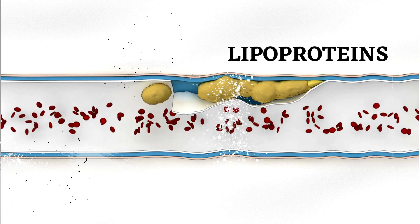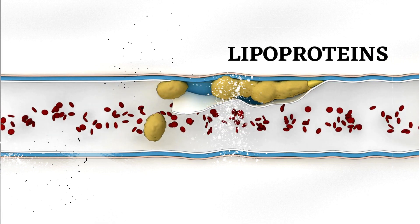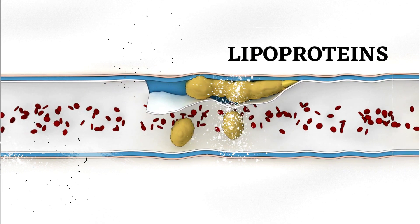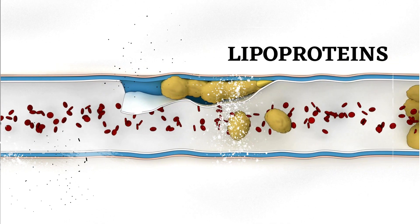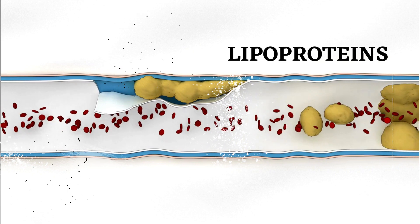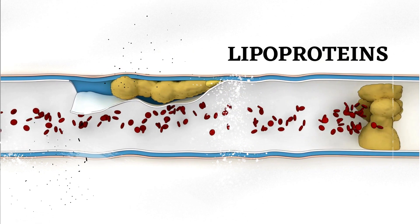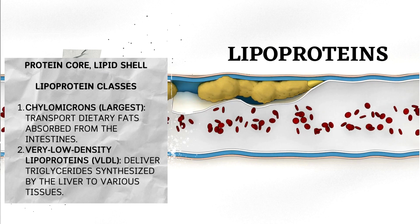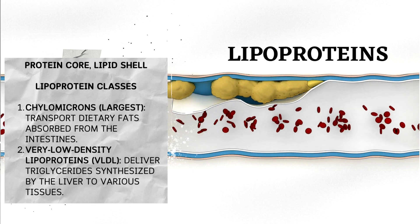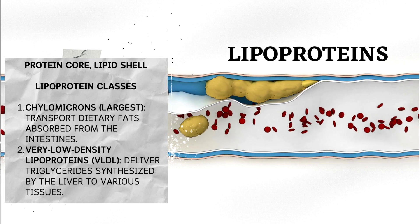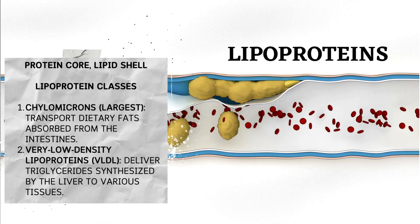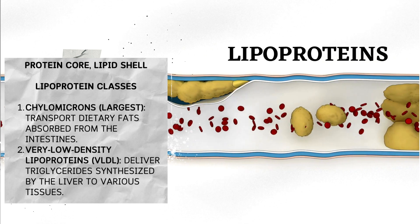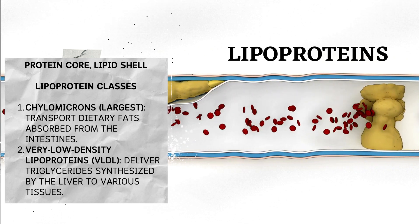Lipoproteins — the body's fat transporters. Lipoproteins are specialized transport vehicles in the blood, responsible for carrying essential molecules like cholesterol, triglycerides, and phospholipids throughout the body. These complexes have a core made of protein surrounded by a shell of lipids.